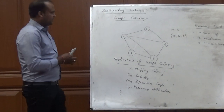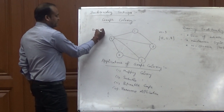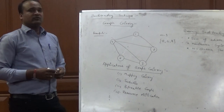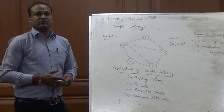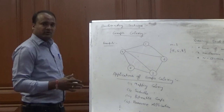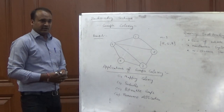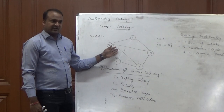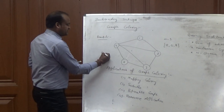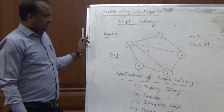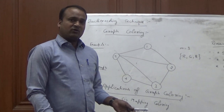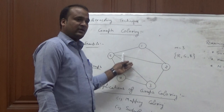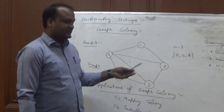Here, we will take an example. After this example, we will just understand the concept of graph coloring and how the backtracking technique will be applied on this graph coloring. First of all, we can understand the concept of graph coloring. Here, these are the vertices and there are a number of edges present — that is known as a graph. A simple graph is taken and we will determine how many colors will be used in the graph.